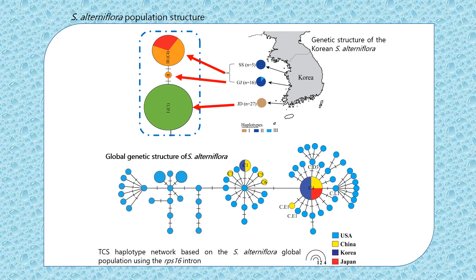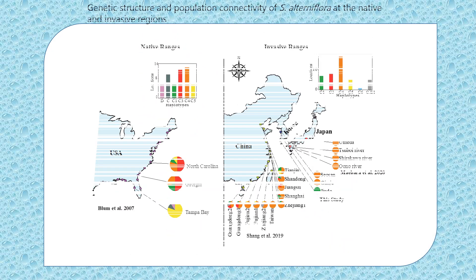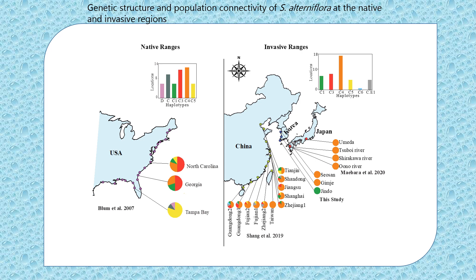In addition, we used sequences determined in this study together with other S. alterniflora sequences retrieved from public databases to investigate the global genetic structure and population connectivity of Spartina alterniflora. The haplotype network revealed a comprehensive biogeographic structure in which Japan and Korea populations constitute similar haplotypes with the Chinese population. When we look at the genetic structure at the native and invasive regions, S. alterniflora was introduced into China from three locations in the US, and the Chinese population was dominated by a specific haplotype. Similarly, in Japan they only found that same haplotype, but in Korea we found it at two locations plus an additional haplotype at one location.